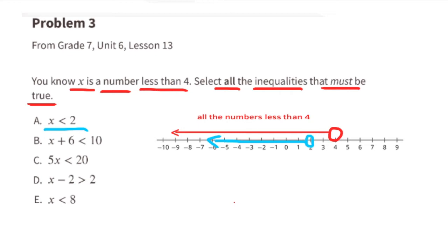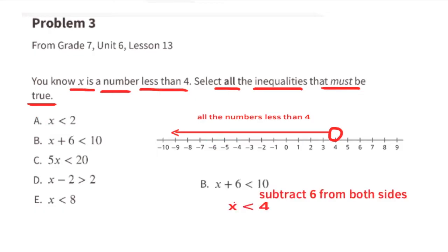Take a look at option a: x is less than 2. That's saying all values of x must be less than two, and that's not necessarily true because originally x must be less than four. There are values between two and four that could also be true, so a is not true — the values for x do not have to be less than two, they have to be less than four. Option b: x plus 6 is less than 10. Subtract 6 from both sides and you get x is less than four, and that's true.